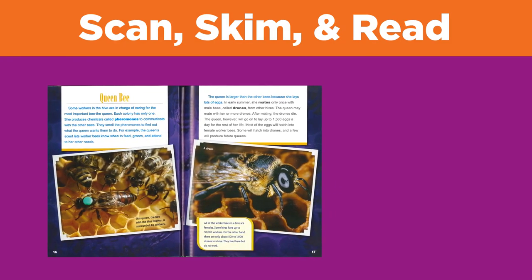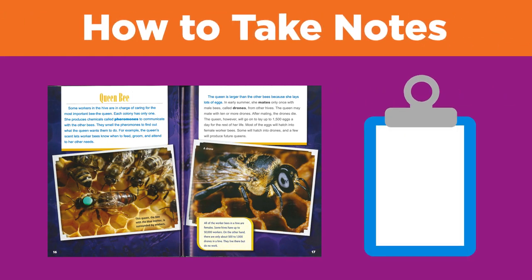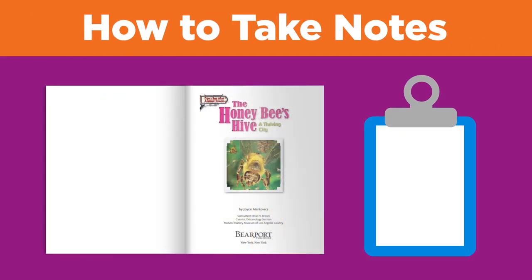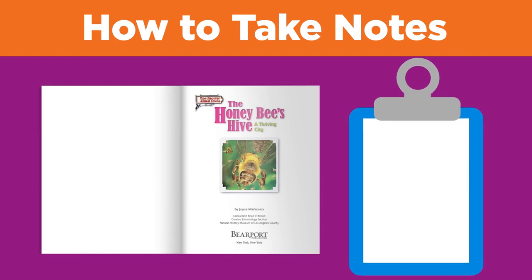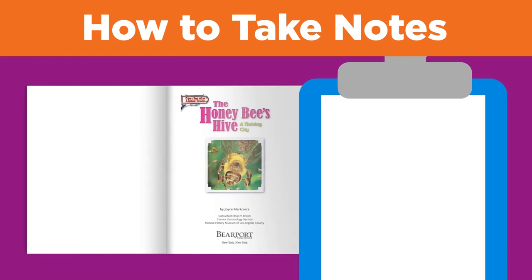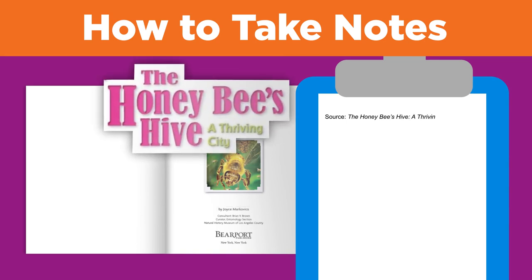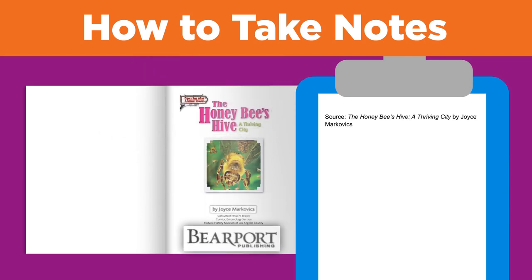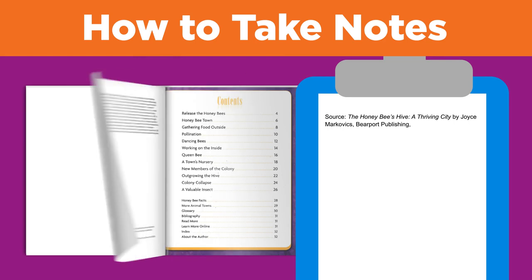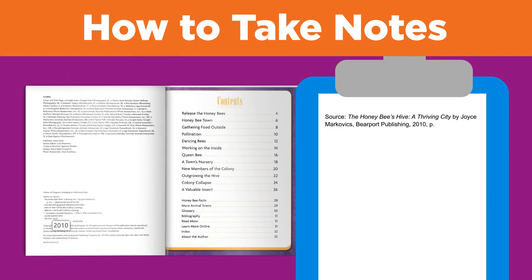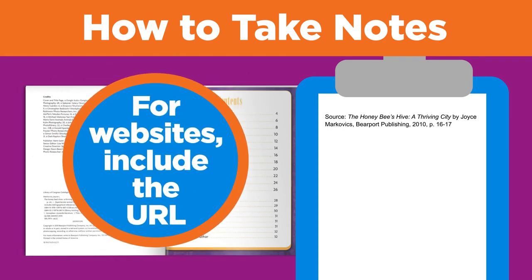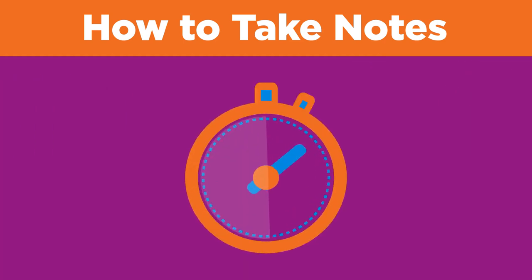If it did, you'll want to remember the information, so now it's time to take some notes. Every time you take notes from a new source, write down the details you will need to create a citation later. This includes title, author, publisher, publication date, and page numbers. For websites, also include the URL. Doing this now will save you time later.